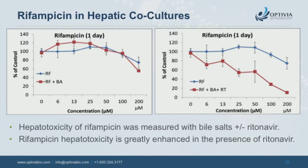For rifampicin: looking at a one-day culture with and without bile acids, we don't see too much difference. But in the presence of ritonavir, we see great potentiation. Ritonavir inhibits PGP — which is present in these hepatocytes — allowing more rifampicin to enter. The rifampicin then inhibits the uptake transporters, causing more bile acids to build up in the hepatocyte, indicating hepatotoxicity.